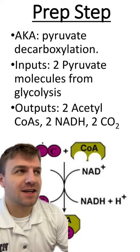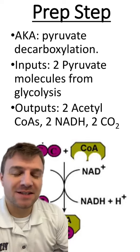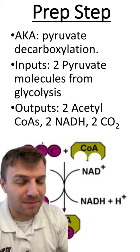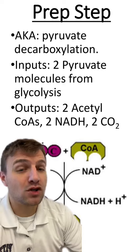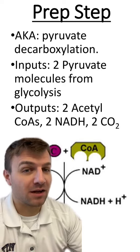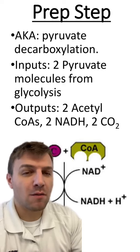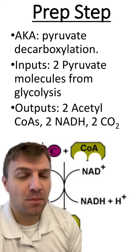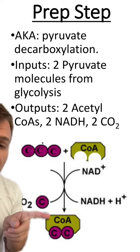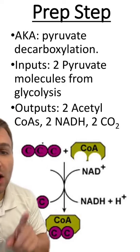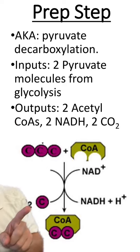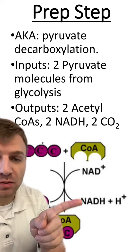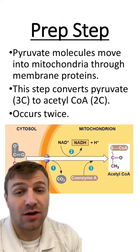Pyruvate decarboxylation is the second step within cellular respiration, also known as the prep step. The inputs for this step are two pyruvate molecules from glycolysis, each with three carbons. The outputs are two acetyl-CoA molecules with two carbons, two CO2 molecules each with one carbon, and two NADH molecules.